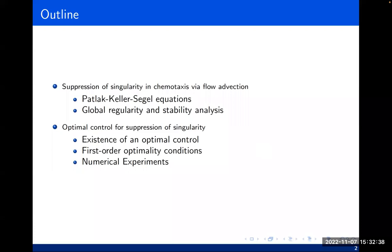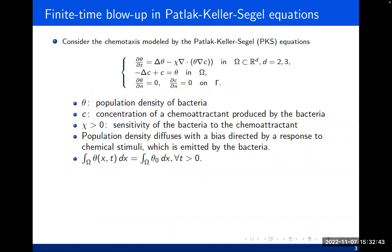To start, let me introduce this mathematical model, which is one of the classic parabolic-elliptic type equations to describe chemotaxis. Looking at the first equation, we have a nonlinear parabolic equation. Theta here stands for the population density of certain bacteria, and C stands for the concentration of the chemoattractant produced by the bacteria. C is governed by an elliptic equation. The population density moves toward the direction where C is — the chemoattractant is produced by the bacteria itself.